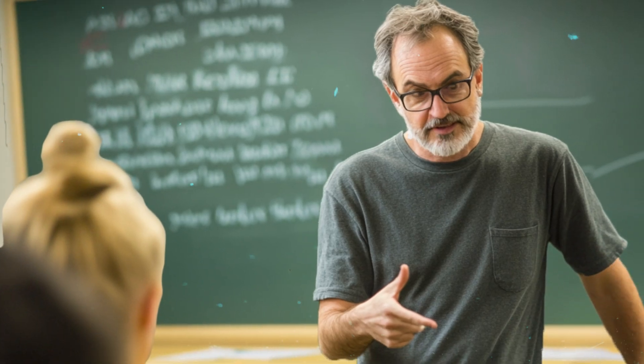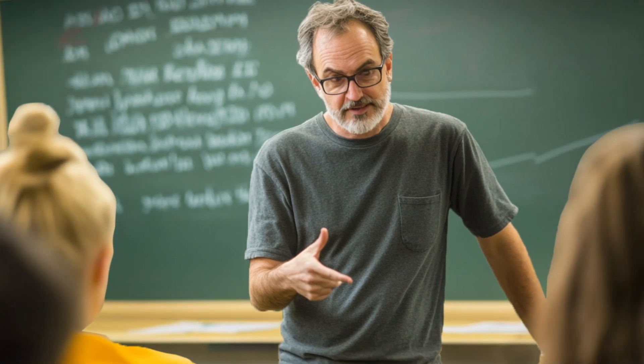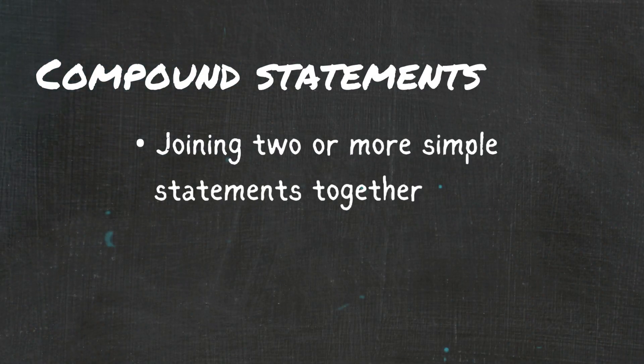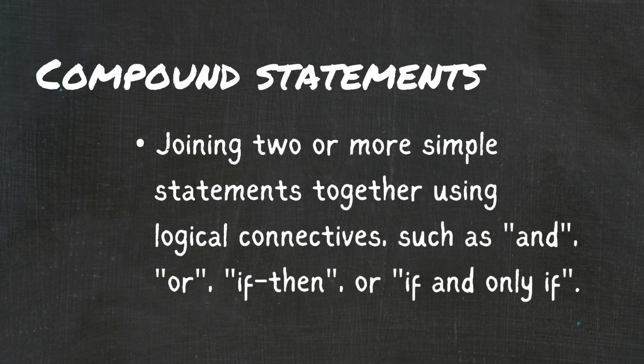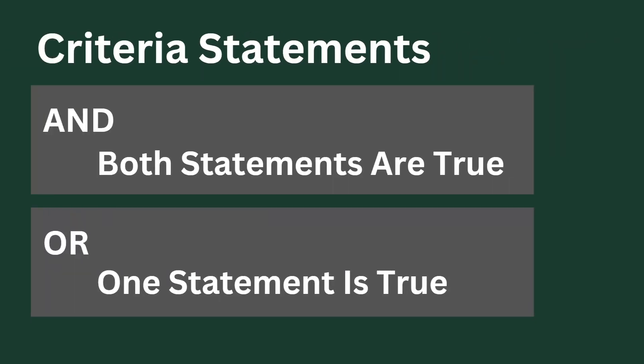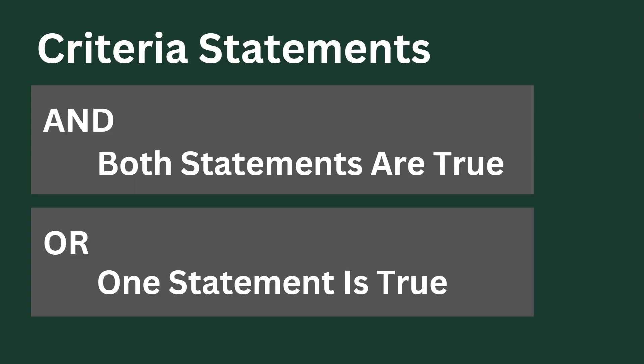Before I jump into the real examples, let's go over a brief summary of what criteria statements are. If you remember back in grade school, you might have learned about compound statements and using logical connectors such as AND or OR. It's very similar with all of the Zoho applications that use criteria. The two main terms you need to know are AND and OR. AND means both statements need to be true for the condition to move on, whereas OR means only one of the statements needs to be true.